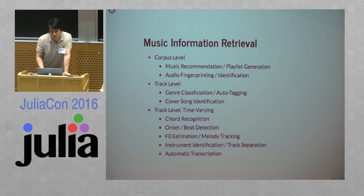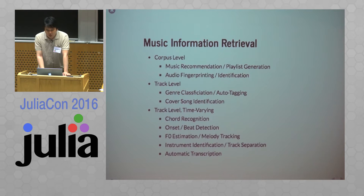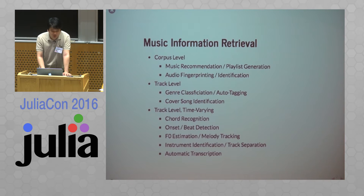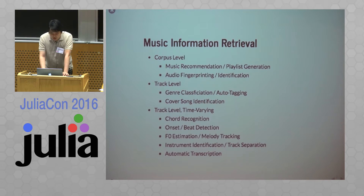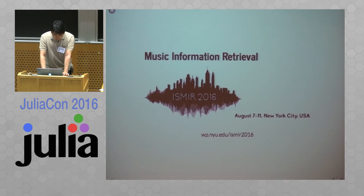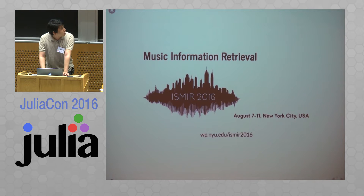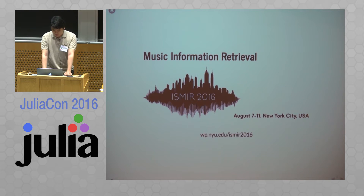So what is Music Information Retrieval? It is a study about retrieving information from music. At the corpus level, the problems are music recommendation and audio fingerprinting. If the output is a function of a track, examples are genre classification and cover song identification. Many interesting applications are on time-varying signals like chord recognition, onset detection, fundamental frequency estimation, and ultimately automatic transcription. The conference on this topic is happening in August in New York City, and NYU is organizing it, so anyone interested is welcome.